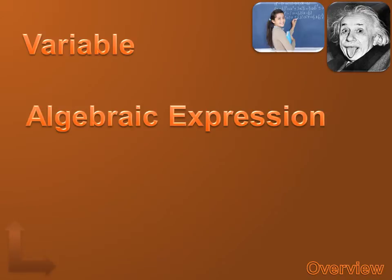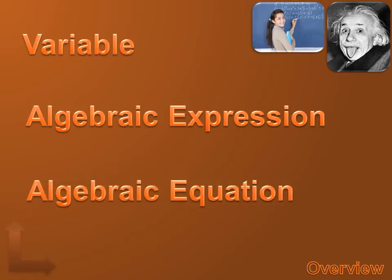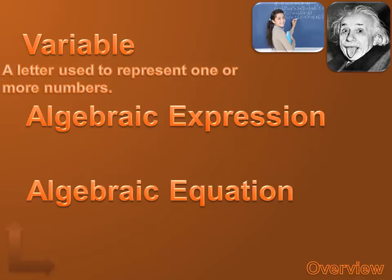Or actually, these are definitions. These are the fundamental parts of Algebra. And those include a variable, an Algebraic expression, and an Algebraic equation. Well, what's a variable? Well, a variable is a letter used to represent one or more numbers. You're going to discover that in Algebra, some of the numbers we don't know. We don't know exactly what that number is going to be, so we represent that unknown number with a letter like X or A or B.